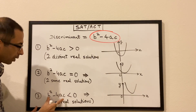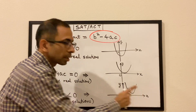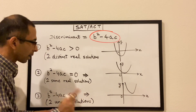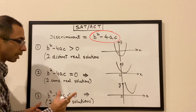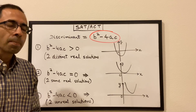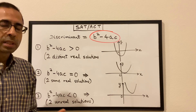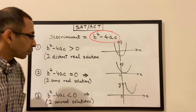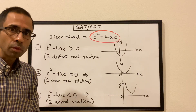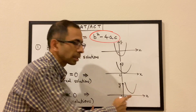In the third scenario, when the discriminant is less than 0 or negative, the parabola will not cut or touch the x-axis at all. Hence the function will have two unreal or imaginary solutions. A quadratic function always has two solutions, so even when the discriminant is less than 0 it has two solutions — but they are imaginary, and the parabola does not intersect the x-axis.